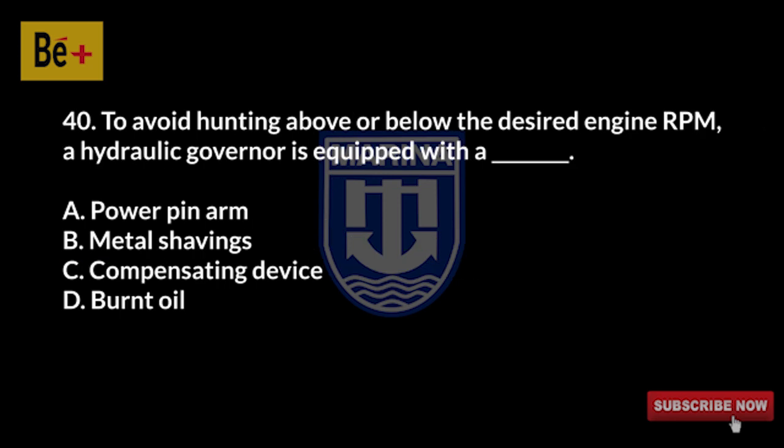To avoid hunting above or below the desired engine RPM, a hydraulic governor is equipped with: A) a power pin arm, B) metal shavings, C) a compensating device, D) burnt oil. The answer is C, compensating device.